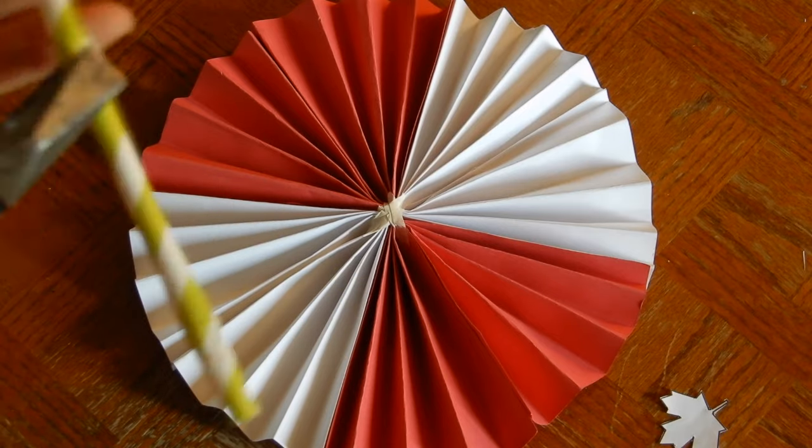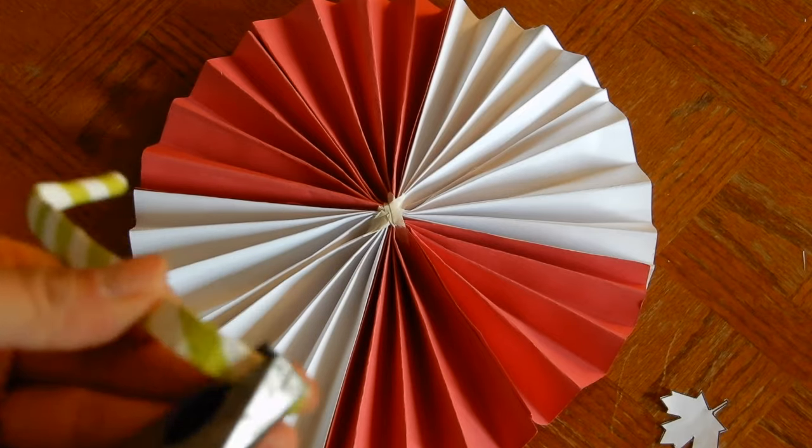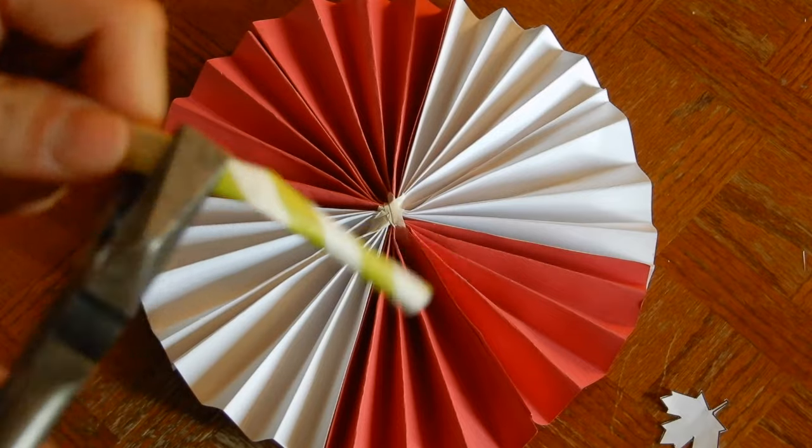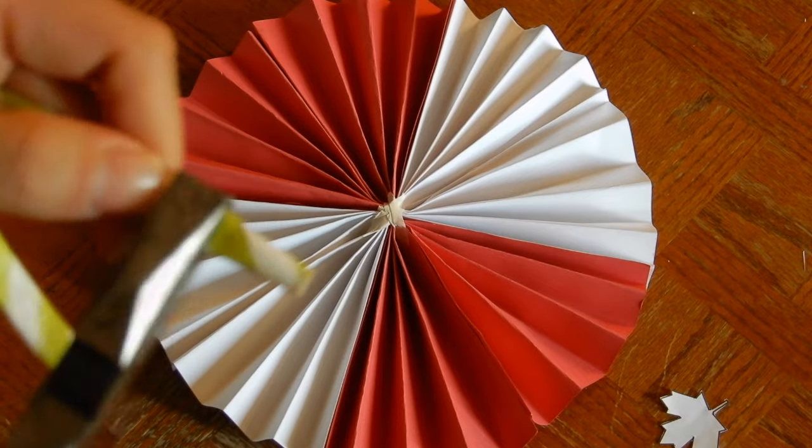So now that I've got the tape in, I am going to flatten the paper straw. I'm using pliers, but you can use your own hand if you like. You'll notice it's all flat. And I'm going to thread it through the middle.